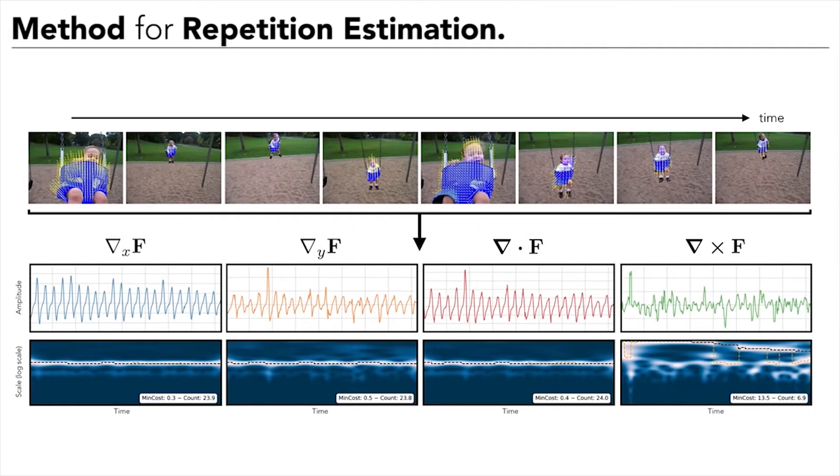Our method for repetition estimation uses motion localization and filtering. To handle non-static video, we first perform motion segmentation using a state-of-the-art method. We then represent the salient moving object by six first-order motion maps, including the divergence, gradient and curl, of which only 4 out of 6 are shown here.